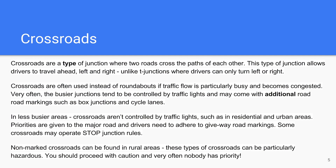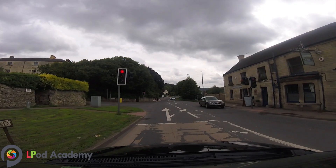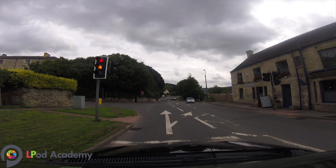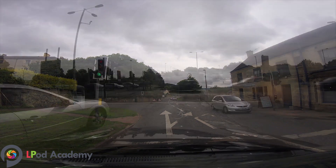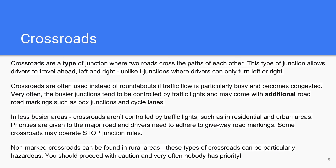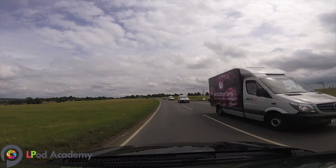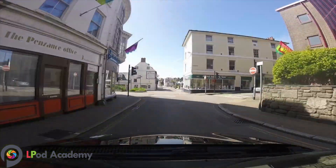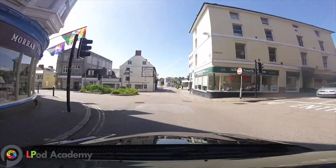Crossroads are often used instead of roundabouts if traffic flow is particularly busy and becomes congested. Very often, busier junctions tend to be controlled by traffic lights and may come with additional road markings such as box junctions and cycle lanes. In less busy areas, crossroads aren't controlled by traffic lights, such as in residential and urban areas, where priorities are given to the major road and drivers need to adhere to give way road markings.